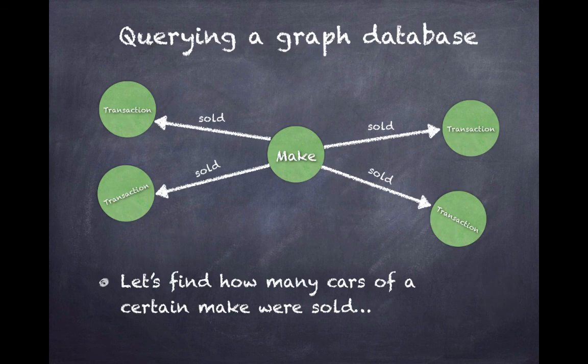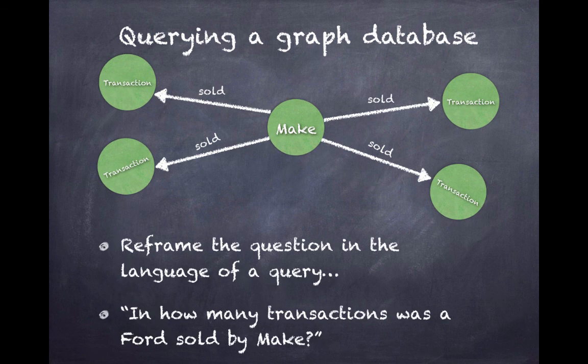Querying a graph database, we'll find how many cars of a certain make were sold. We'll use some of those in, out functions that we saw earlier. A make could be sold many times in many different transactions. So if we want to see how many times a make was sold, we'll rephrase our question in something more like the query language. And how many transactions was a Ford sold by make?